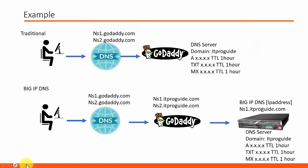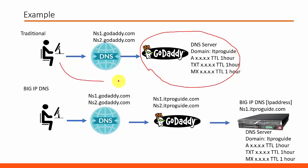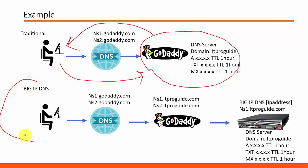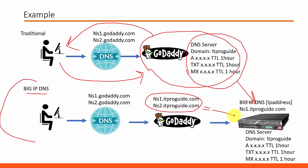Let us take an example to understand this clearly. ITproguide was registered and hosted in GoDaddy, and all its records were held in the GoDaddy DNS server, meaning any request from any client was resolved by GoDaddy DNS. As traffic to the website increased and performance improvement and high availability were needed, Big IP DNS was implemented. All the records from GoDaddy — like A records and MX records — were moved to Big IP DNS, and GoDaddy was configured with the Big IP DNS server addresses as the name servers. From then on, all queries for itproguide.com are resolved from Big IP DNS instead of GoDaddy DNS.